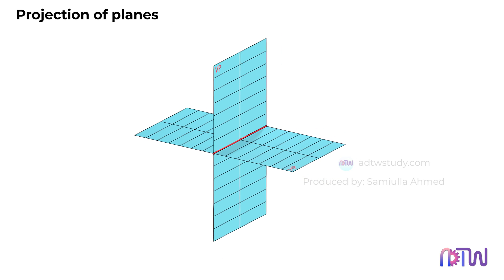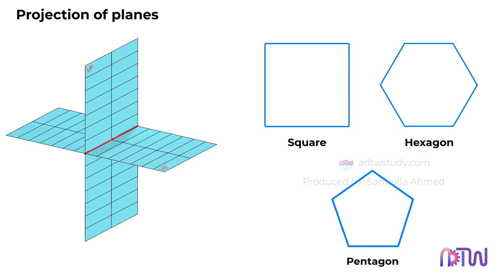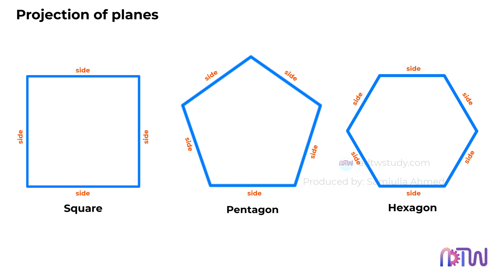We'll start by examining a few basic planes, which will serve as a foundation for understanding more complex ones. First, let's familiarize ourselves with some basic terminology. The sides or edges of a plane are the lines that define its shape, while the corners are the points where these sides meet.